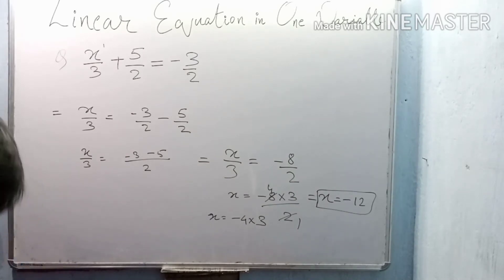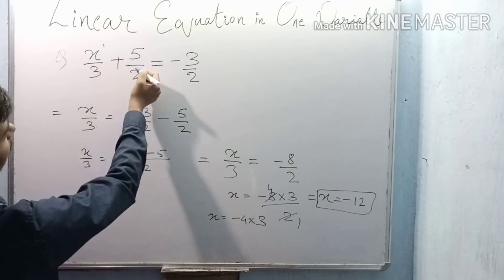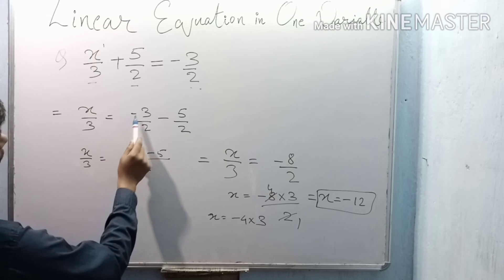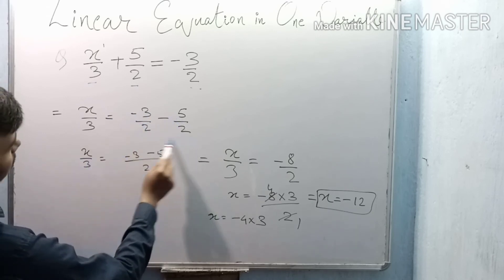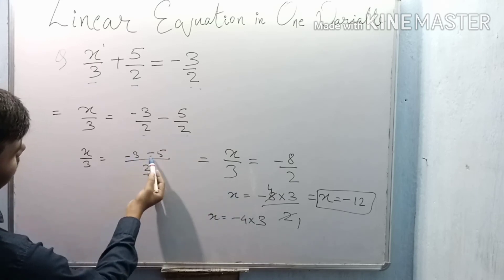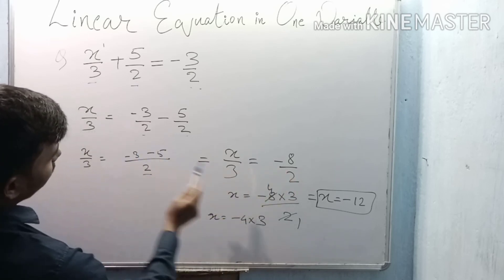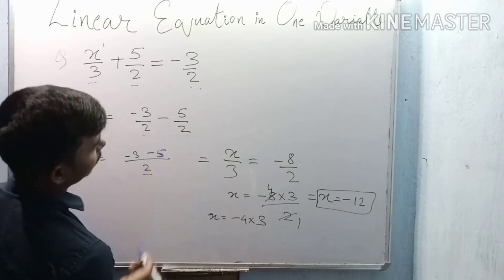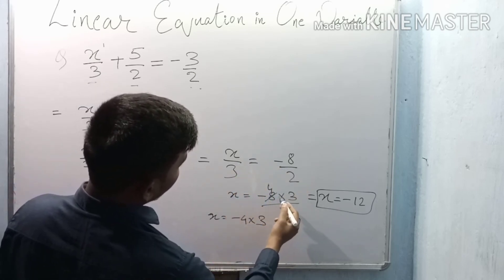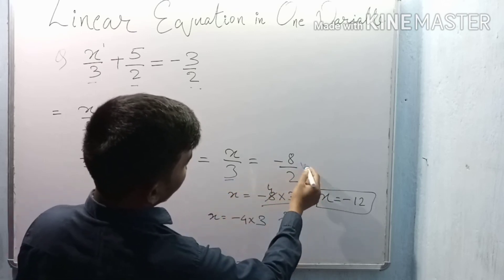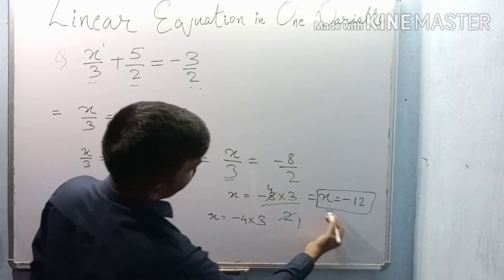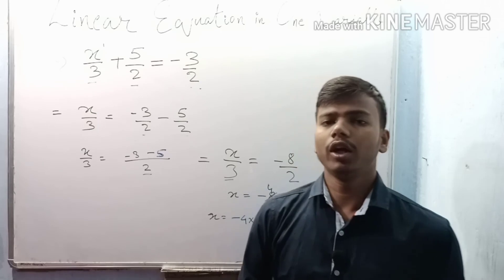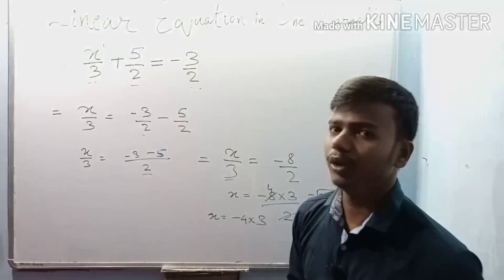Continuing: x by 3 equals minus 8 by 2, so x equals minus 8 multiplied by 3 divided by 2. Simplifying, 8 divided by 2 is 4, so x equals minus 4 into 3, which gives x equals minus 12. These were very simple introductory questions. I hope you understood the introduction to linear equations in one variable. In the next video, we will solve all the NCERT questions. Thank you.